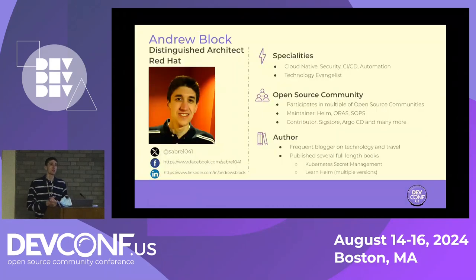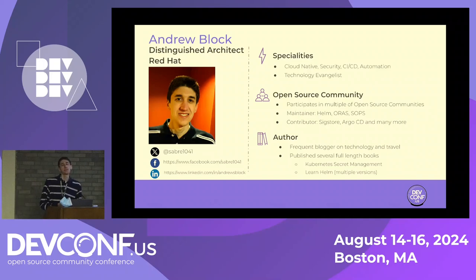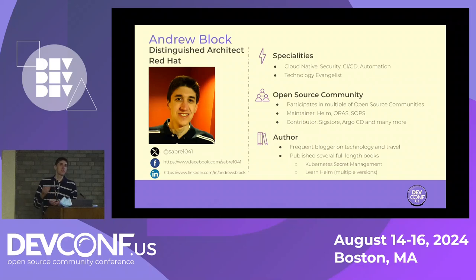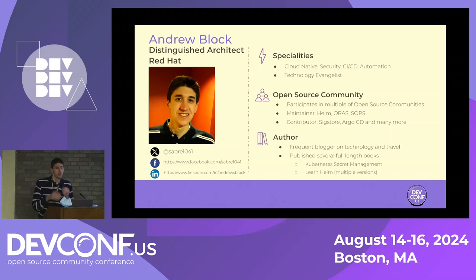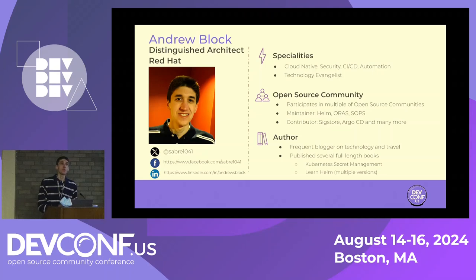My name is Andy Block. I'm a distinguished architect at Red Hat, working in our services organization. I work with customers globally doing a little bit of everything — from Red Hat Enterprise Linux to Kubernetes, OpenShift, and anything in between. I focus on cloud native technology, security, CI/CD, and automation.